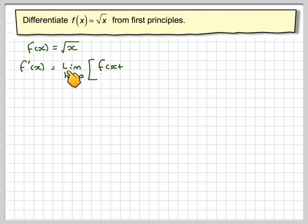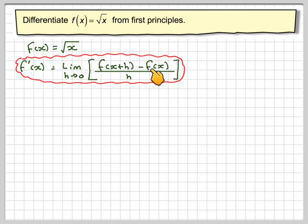From first principles, f dash of x is the limit as h goes to 0 of f of x plus h minus f of x over h. So it's going to be equal to the limit as h goes to 0. So f of x plus h is going to be the square root of x plus h, so remember your function notation, minus the square root of x all over h.